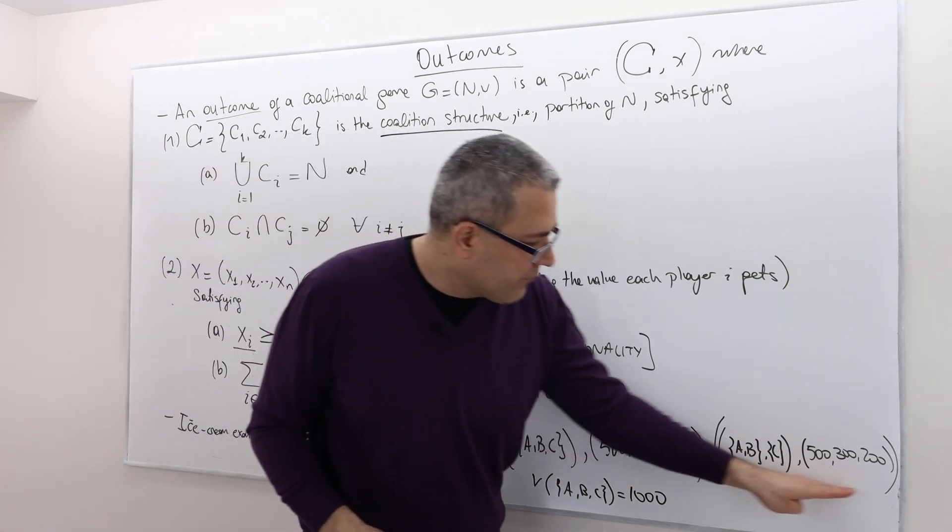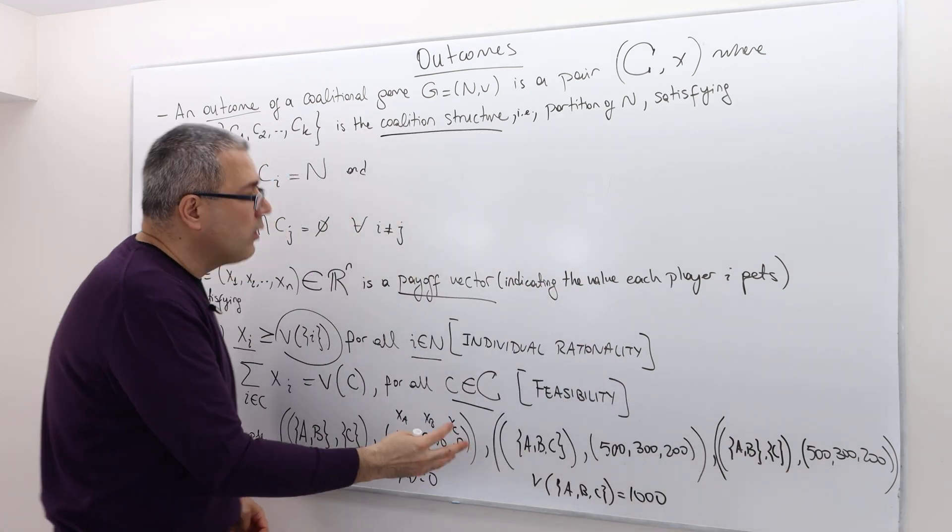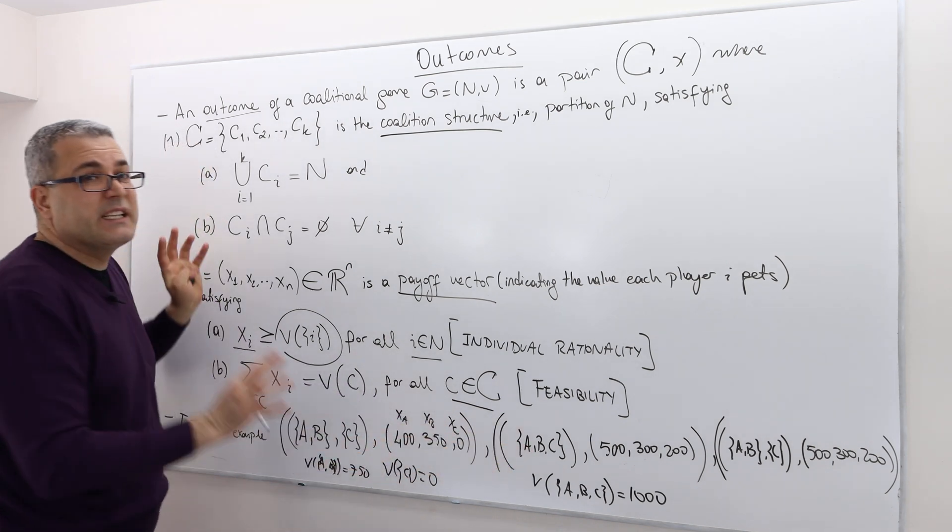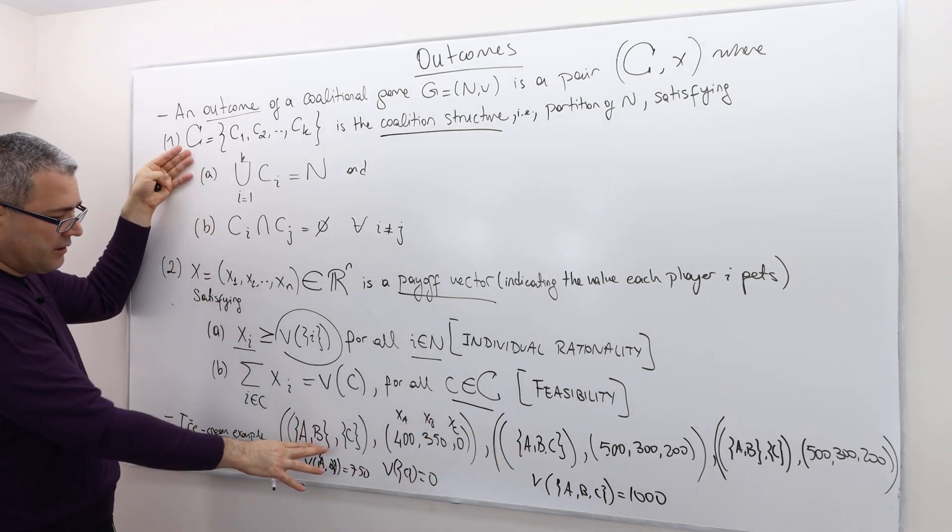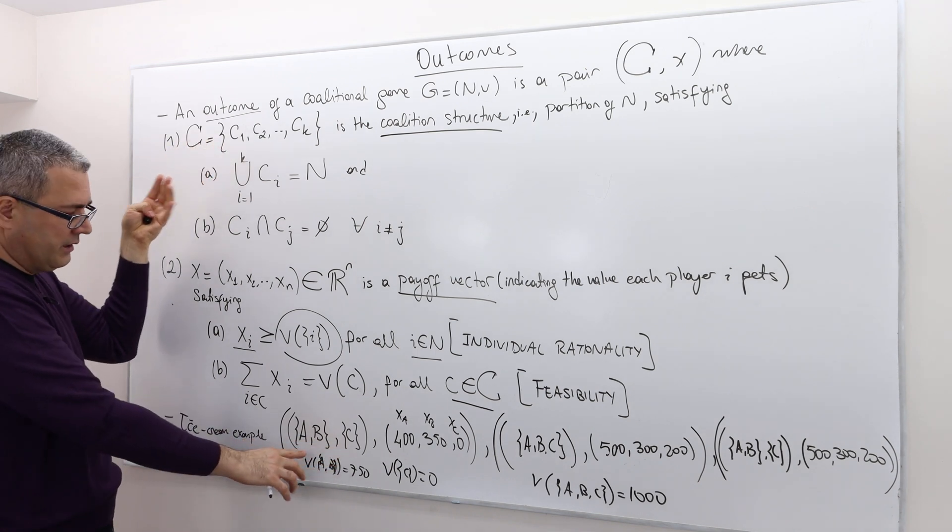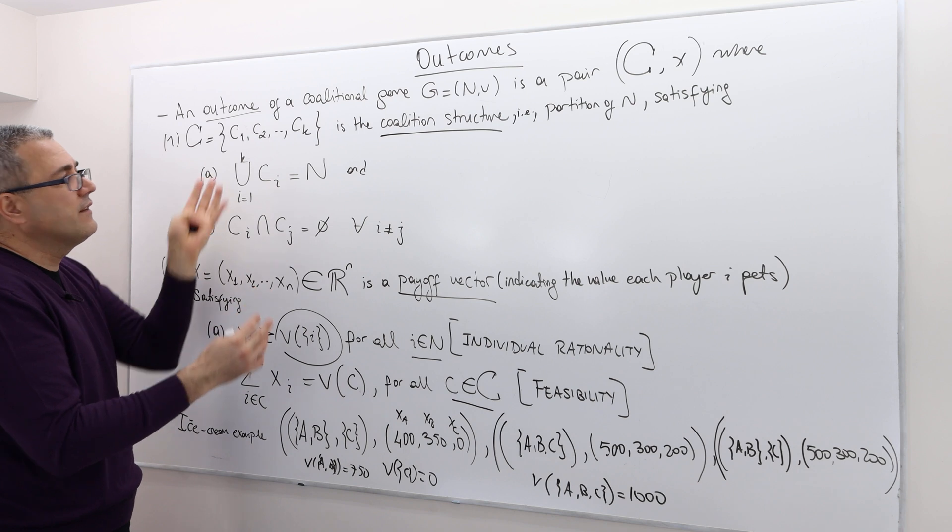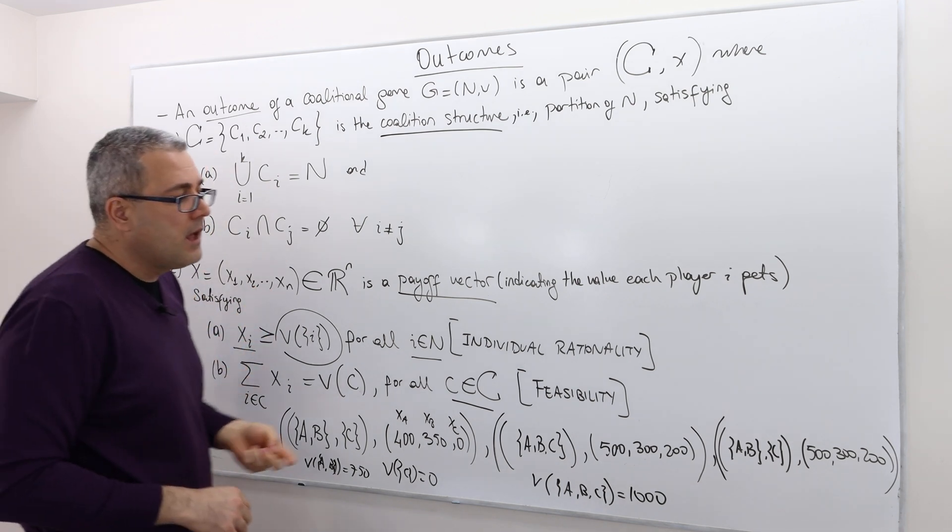What else? This one, well, here, the coalitional structure, the C set, is just A, B, C itself. Here, the coalitional structure, there are only two coalitions, A, B. So this is, let's call it C1, and C itself. So that's C2.